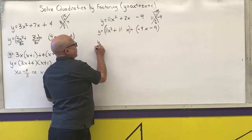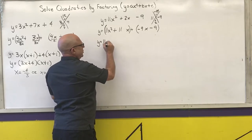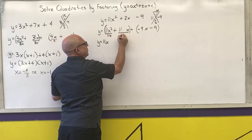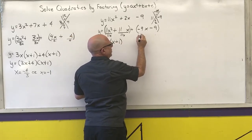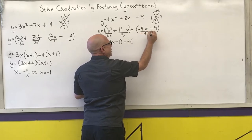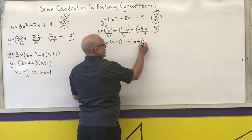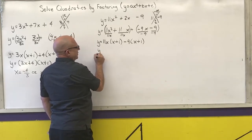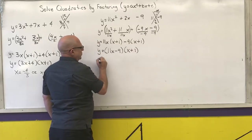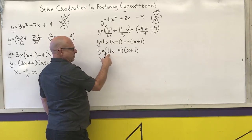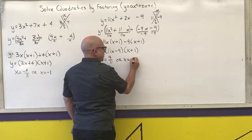The GCF of the first group is 11x. Dividing: 11x squared over 11x is x, and 11x over 11x is 1. The GCF of the last two terms is negative 9. So negative 9x divided by negative 9 is x, and negative 9 divided by negative 9 is positive 1. What's inside the parentheses is the same, so combine what's outside. To solve: opposite of negative 9 is 9 over 11, or x equals opposite of 1, which is negative 1.